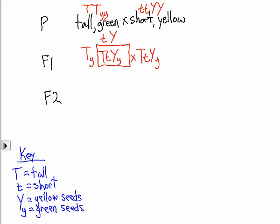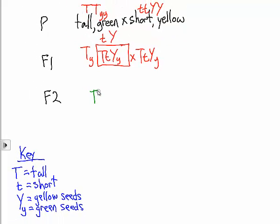Possible gametes for parent number one. Let's say that's the female, so the types of eggs that she can make: big T, big Y; big T, little y; little t, big Y; and little t, little y. And the second parent, the male, can make only the same four kinds of sperm.